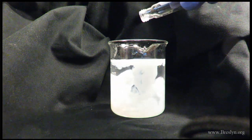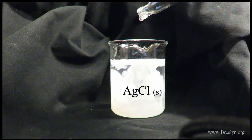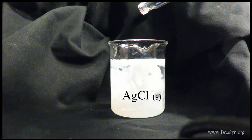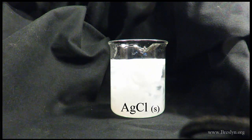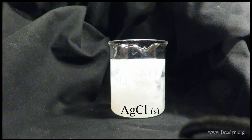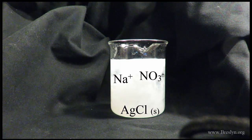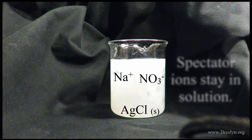That white cloud is the AgCl, the silver chloride. It's actually a solid that will fall to the bottom of the beaker and just be a white layer. The NaNO3, however, is still aqueous, still dissolved. Those are called spectator ions.